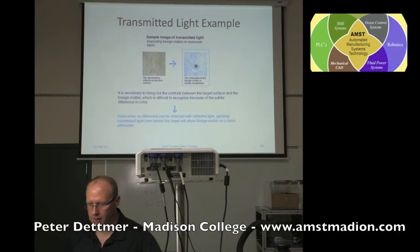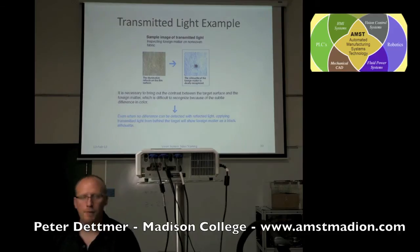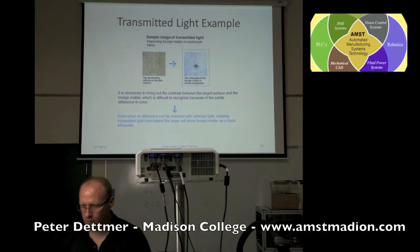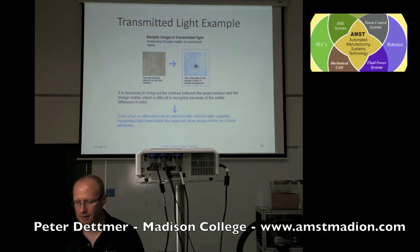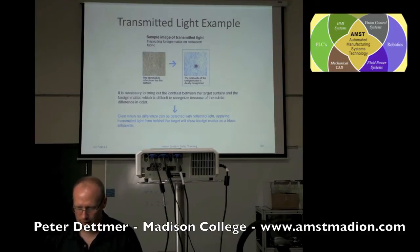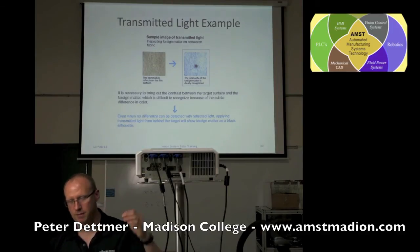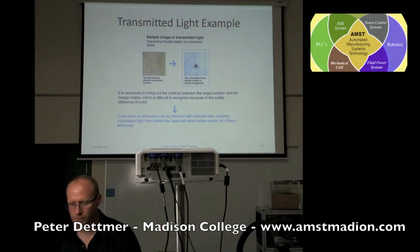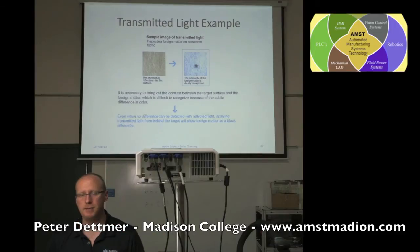Transmitted light — this is a film, and we're looking for a stain of foreign matter inside that film or fabric. Transmitted light is the backlighting. In this example, it highlights the stain very well.